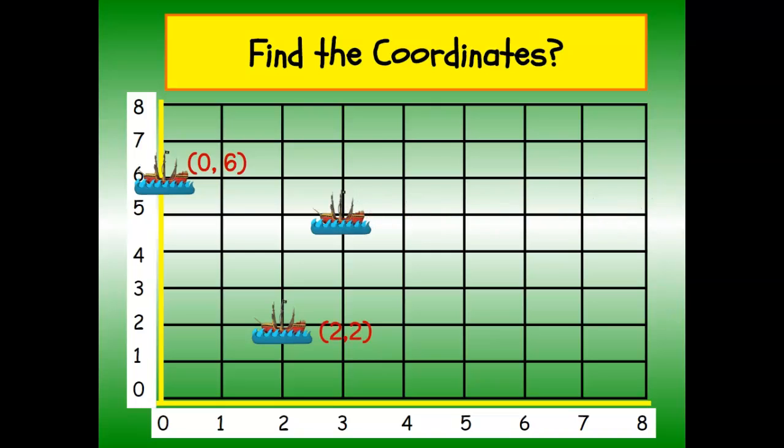Next boat. Should get faster as we go. Over and up. So three, five. Next one. Over and up. Five, one. And last boat on this one. Over and up should be seven, five.